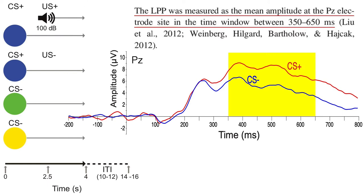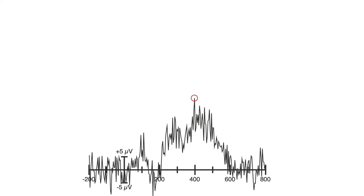Another common approach is to find the peak voltage in each condition. I'm not a fan of using the peak. Why should we care when the voltage reaches a maximum? The ERP component and the underlying neurocognitive process are extended over time. Also, peaks are really distorted by high-frequency noise, which reduces statistical power. See how noise has distorted the peak amplitude of this waveform? Another problem with peak amplitude is that it's biased by the noise level — the noisier the data, the bigger the peak.